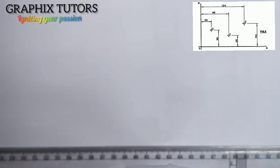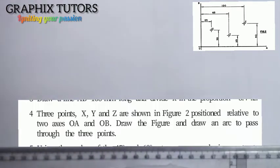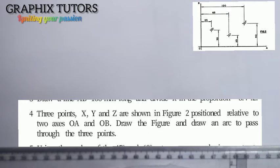Good everyone, my name is Graphics. If you look at your top right corner of your screen, you'll discover there is a question. The question says: three points X, Y, and Z are shown in the figure, two positions relative to two axes OA and OB. Draw the figure and draw an arc to pass through the three points. Now this is the figure.